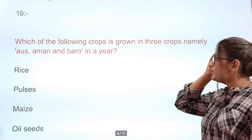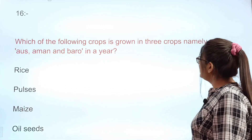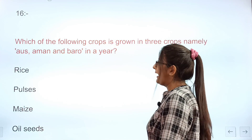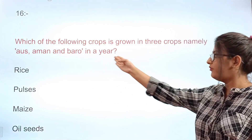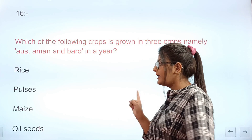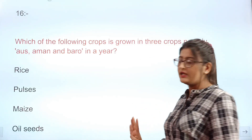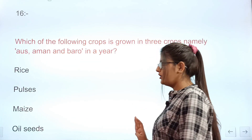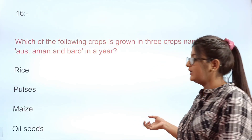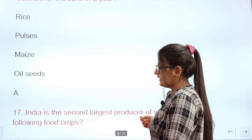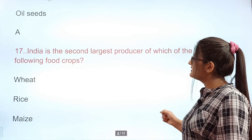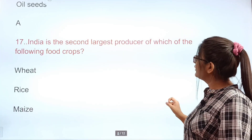Question 16: Which crop is grown in three varieties namely Aus, Aman, and Boro? Options: A rice, B pulses, C maize, D oil seeds. The correct answer is A — rice. These are different varieties of rice.